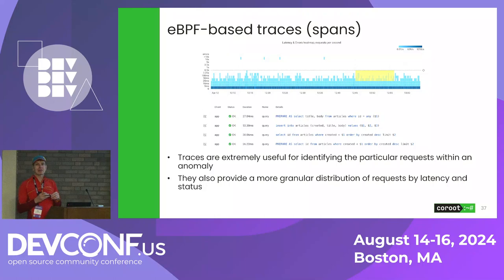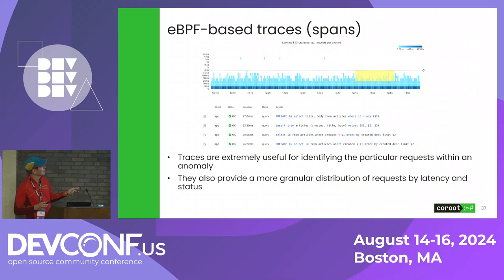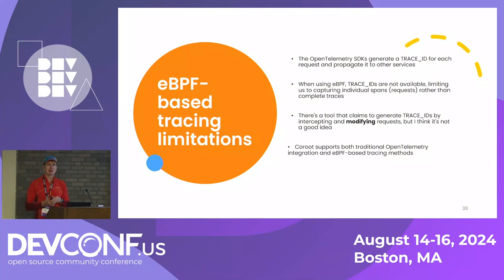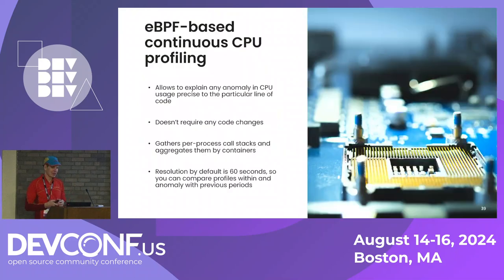We can also use eBPF to simulate traces. As I mentioned, distributed tracing is pretty cool but can be hard to implement. With the Coroot tooling, we can generate OTEL-compatible traces based on eBPF without any code changes. You can use them in Coroot or send them to any other OpenTelemetry backend of your choice. There are some limitations — we can't easily connect different services together because nothing assigns us that span ID — but it's still very cool.